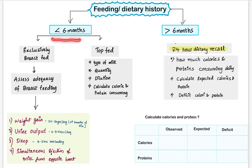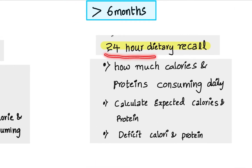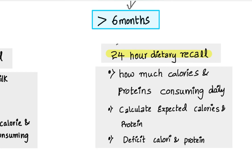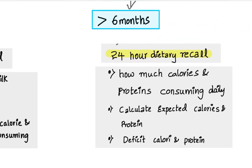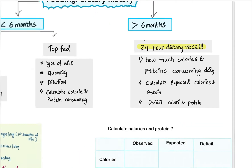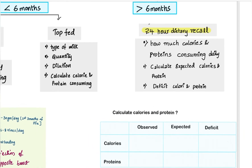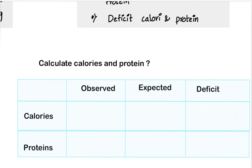If the child is more than 6 months old, we follow the 24-hour dietary recall method. That means in older children, food intake during the 24 hours prior to the onset of illness should be noted to calculate the approximate calorie and protein intake per day. Then we calculate the expected calories and proteins the child should take in a day according to the expected weight for that age, calculate the deficit, and give our dietary advice. All these values are written in a table.